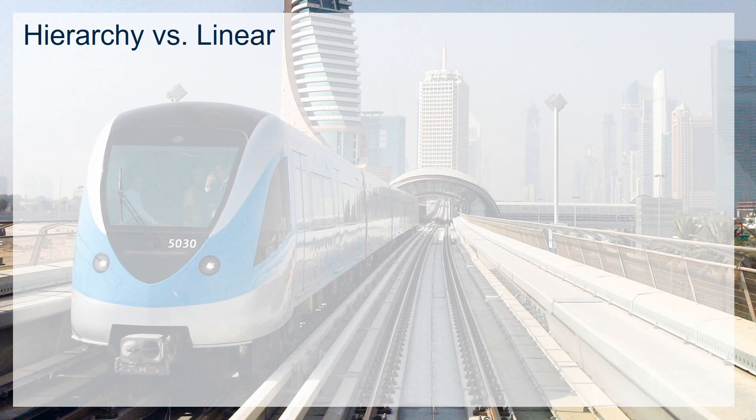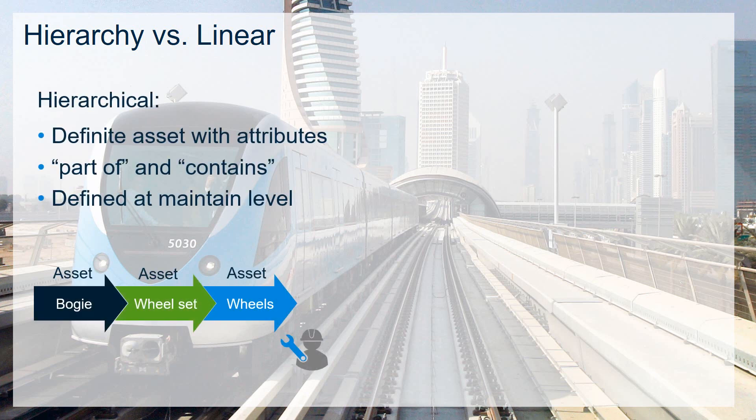The reason why we have separate tools for linear assets is usually because we have a different language when talking about these assets. When we look at a rail car in a hierarchy system, a car has bogies, the bogies have wheel sets, wheel sets have wheels, and we typically maintain assets at the level we define them. If we have an asset registry that has a wheel, we define attributes associated with that wheel.